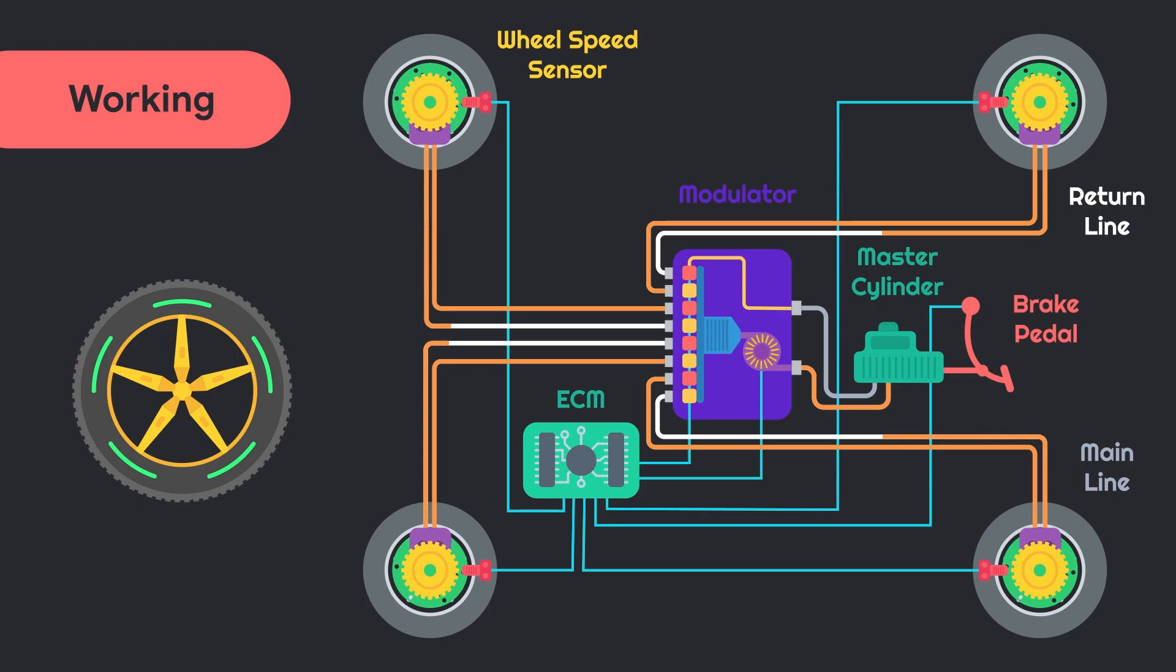As soon as the locking starts on the signal of sensor, ECM releases the pressure of oil by closing the supply valve and opening the release valve simultaneously. This process repeats until vehicle slows or completely rests as per the driver's input. This ensures the efficient braking of vehicle with minimum amount of skid.